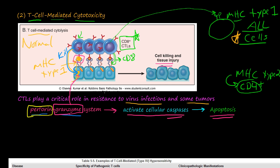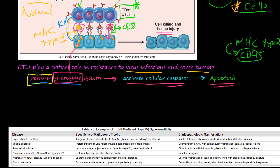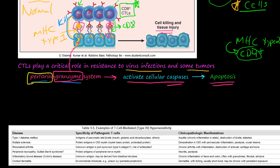That's the normal process. However, in this hypersensitivity disease — T-cell mediated cytotoxicity, or part two of the type 4 hypersensitivity diseases — the CD8 cells kill these cells because of a triggered antigen. We're not sure exactly why it occurs in most cases, but we know it's the CD8 plus cells killing these individual cells. Here are some examples.